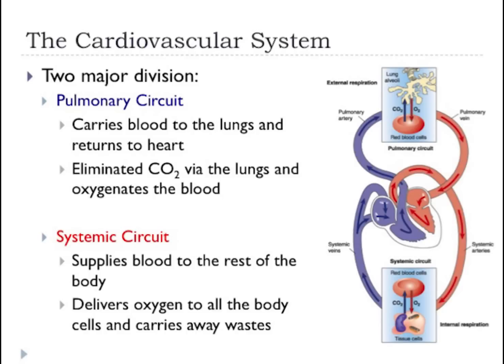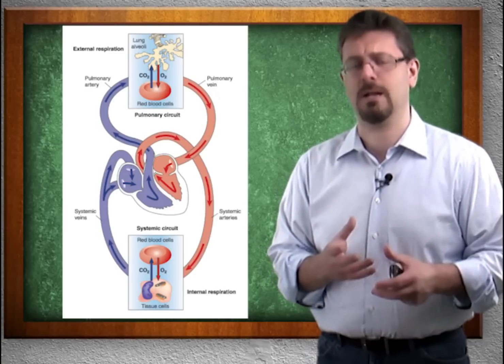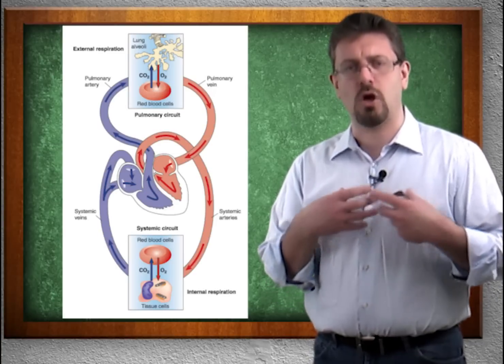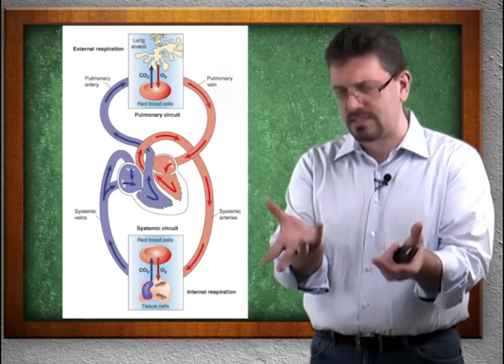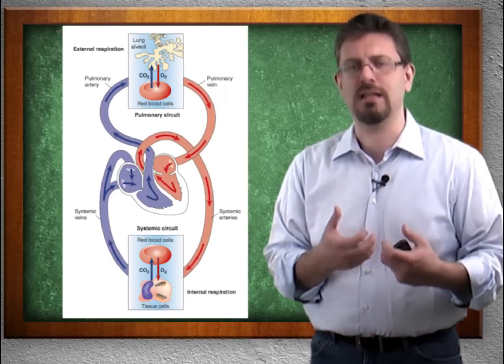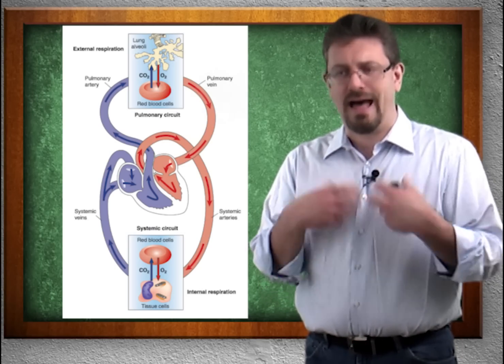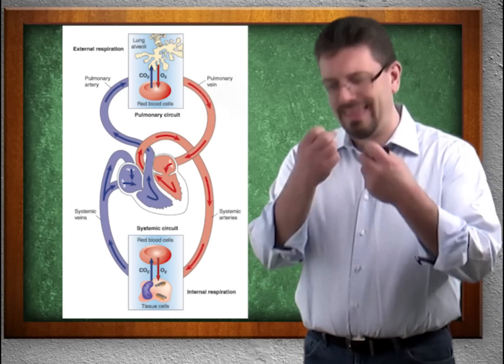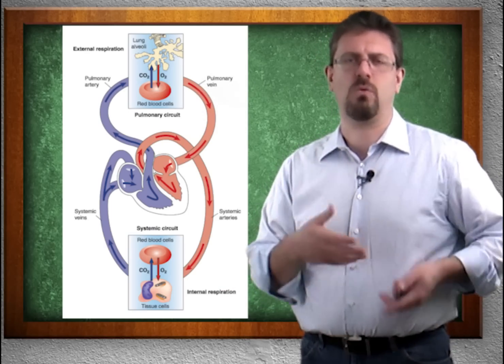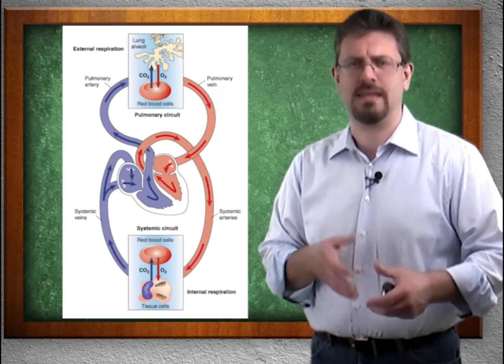The pulmonary circuit carries blood to the lungs and returns it to the heart. It eliminates CO2 via the lungs and oxygenates the blood. The systemic circuit supplies blood to the rest of the body, delivers oxygen to all the body cells, and carries away waste. So the pulmonary circuit goes to the lungs, gets rid of carbon dioxide, and brings in high oxygen, while the systemic circuit brings oxygenated blood to the toes and returns waste products.